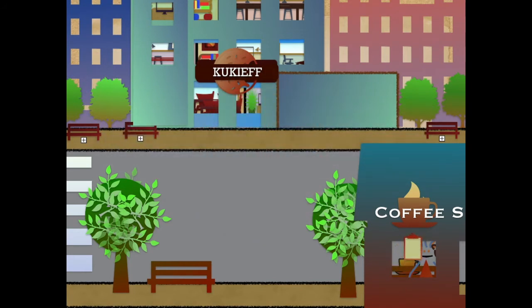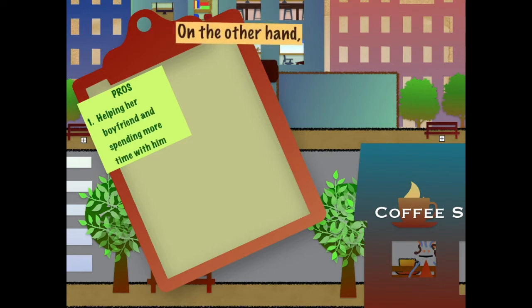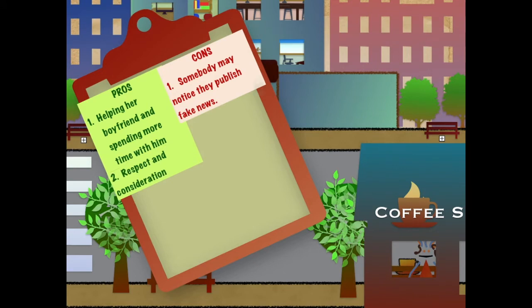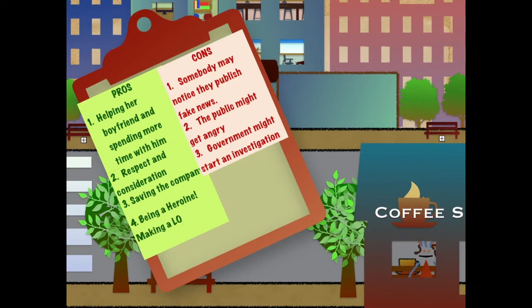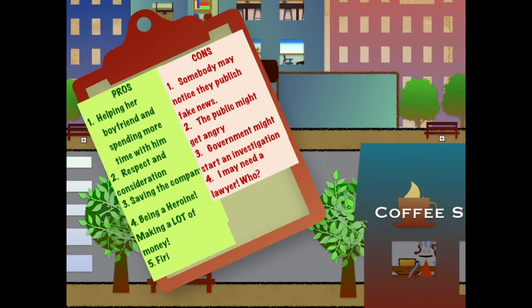She needs to make up her mind. She takes out her notebook and starts writing a list of pros and cons, advantages and disadvantages. Let's see. One clear pro is helping her boyfriend and spending more time with him. On the other hand, somebody may notice they publish fake news. Anyway, getting colleagues' respect and consideration is something very good. However, the public might get angry. Saving the company is a clear win-win, although the government might start an investigation. This is a clear chance to become a heroine. Making a lot of money seems great. On the other hand, she may need a lawyer. Who do I call? Firing Jim, I'd love that. However, they might get arrested.